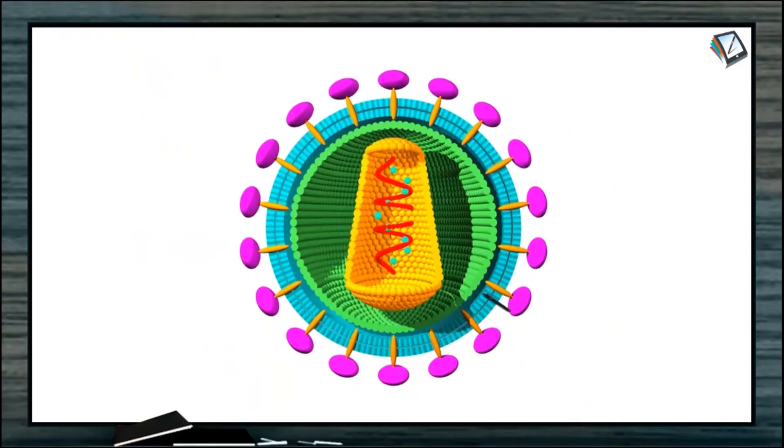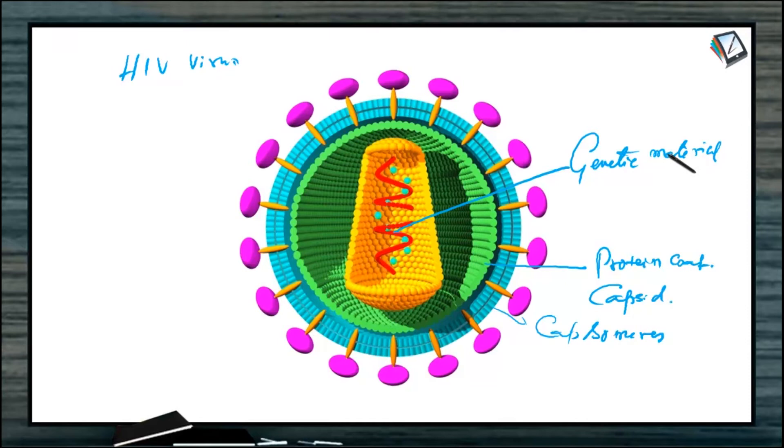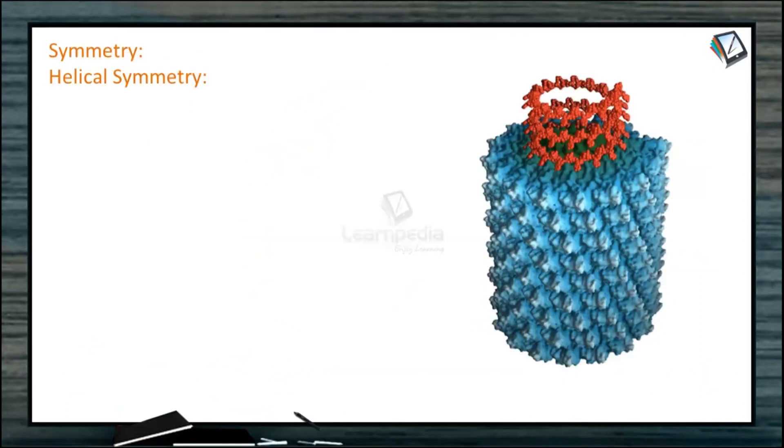Look at this image. This is the image of HIV virus. This is the protein coat, otherwise called capsid. The units of protein are called capsomeres. Of course, this is the genetic material. And in case of HIV, the genetic material is RNA. The viruses which have RNA as genetic material are called retroviruses.